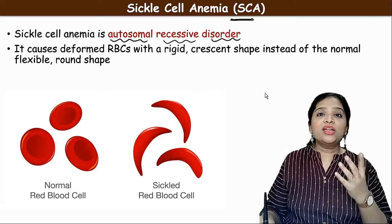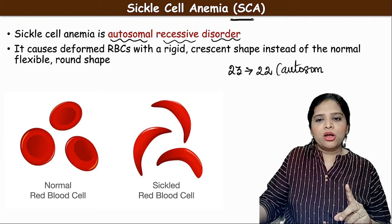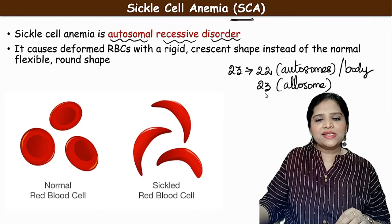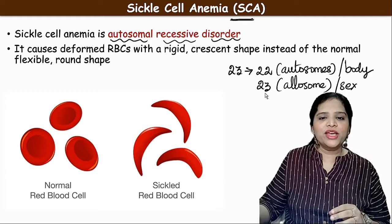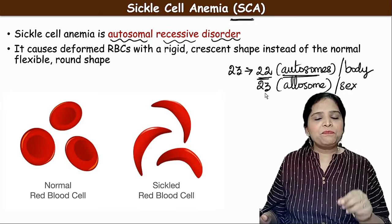Sickle cell anemia — in short, SCA — is an autosomal recessive disorder. Autosomal means it involves the 22 pairs of autosomes, the chromosomes responsible for body characters, as opposed to the 23rd pair called allosomes which determine sex. Sickle cell anemia is a genetic mutation that occurs in the autosomes, which is why it is called an autosomal disorder.